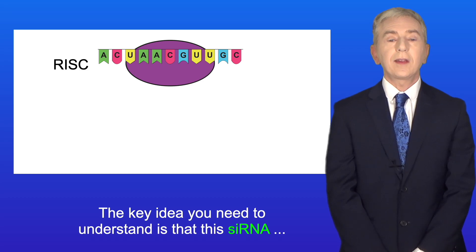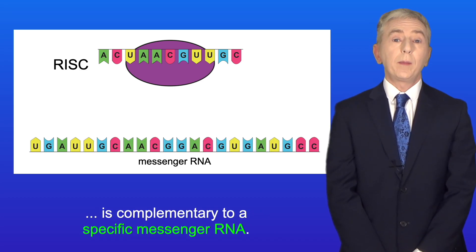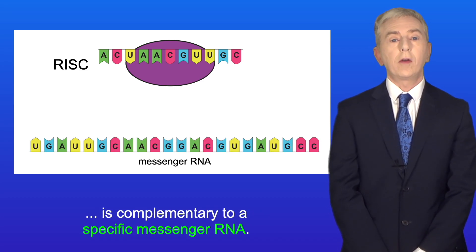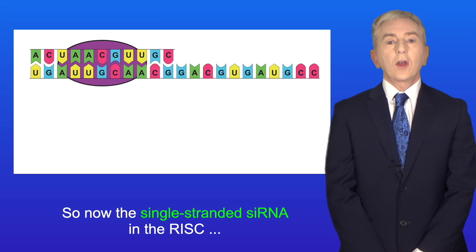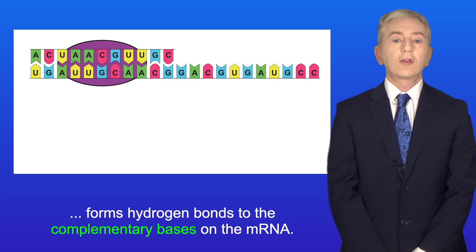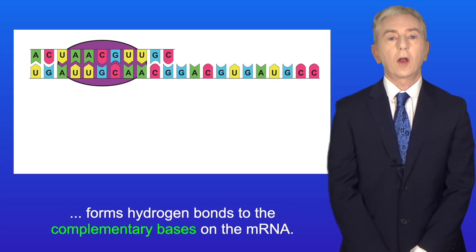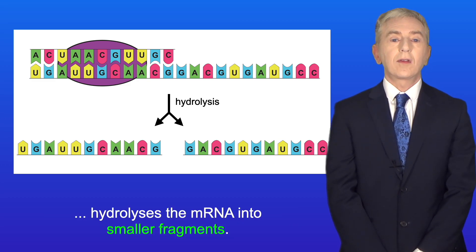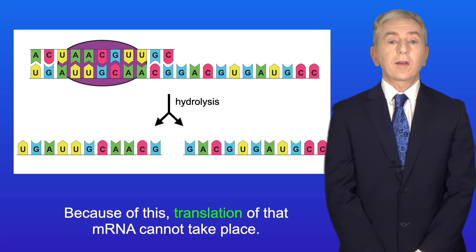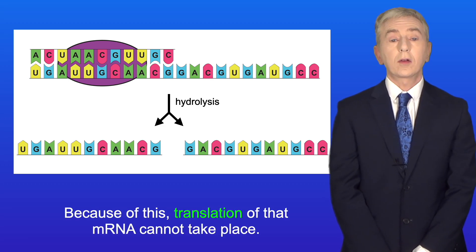Now the key idea you need to understand is that this siRNA is complementary to a specific messenger RNA. And I'm showing that messenger RNA here. So now the single-stranded siRNA in the RISC forms hydrogen bonds to the complementary bases on the mRNA. At this point, an enzyme in the RISC hydrolyzes the mRNA into smaller fragments. And because of this, translation of that mRNA cannot take place.